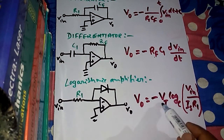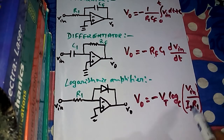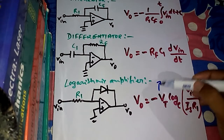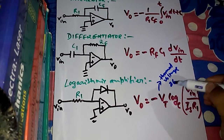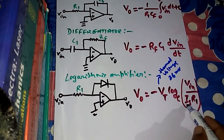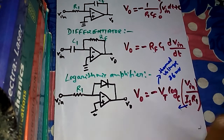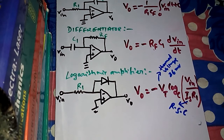We see two new terms: V-T and I-S. These have appeared because of the diode used in the logarithmic amplifier. V-T is called the thermal voltage, which equals 26 millivolts at room temperature. I-S is the reverse saturation current — the small leakage current that flows through a reverse-biased diode.